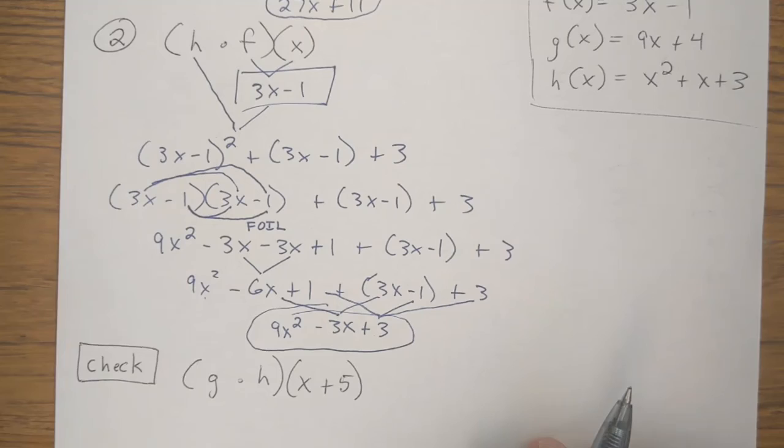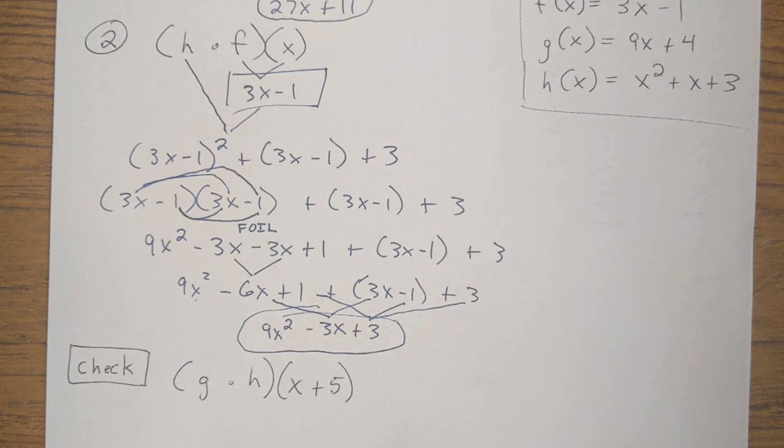I'm going to kind of leave this example up here so you can reference back to it. But I want you to try this check problem now on your own. We need to find G of H of X plus 5. Go ahead and hit the pause button and work this out on a sheet of paper. As soon as you hit unpause, you'll be able to see the answer, check your work, and see how you did.